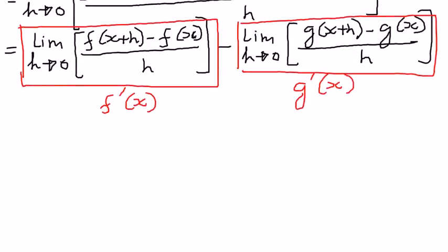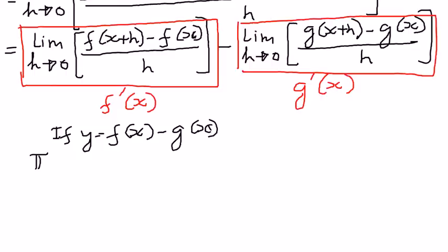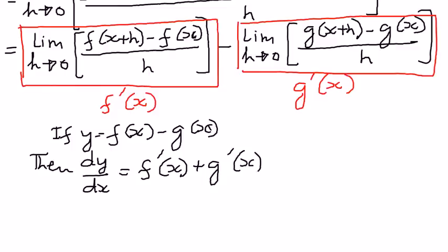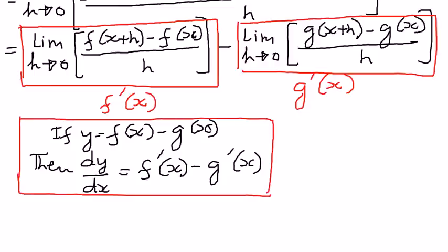So therefore, we can come back and write this as follows. If y is equal to the difference of two functions, f of x minus g of x, then dy by dx is going to be equal to f prime of x minus g prime of x. So I'm going to put a box around this and state it in words: the derivative of the difference of a function is the difference of the derivatives.